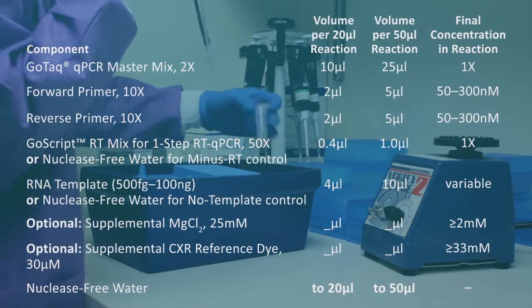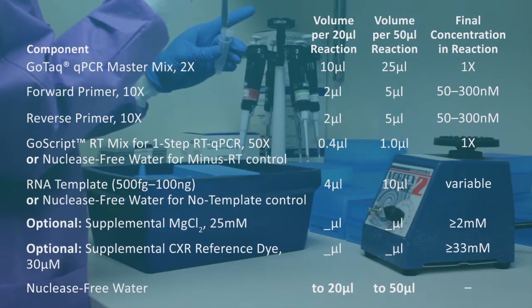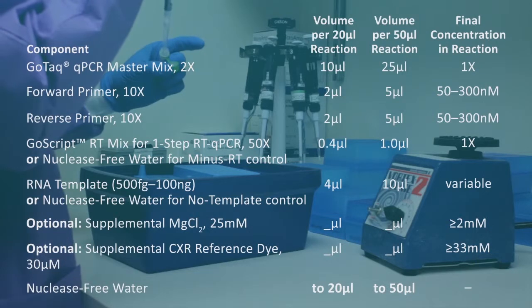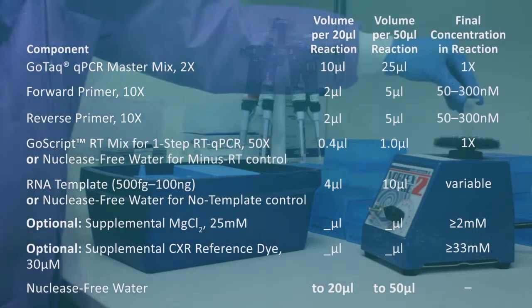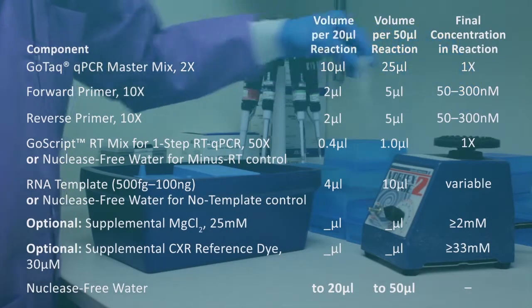Combine the volumes of RNA, primers, and the GoTaq 1-Step System components in a non-stick sterile tube on ice. Thoroughly mix the combinations by pipette or gentle vortexing between each addition.